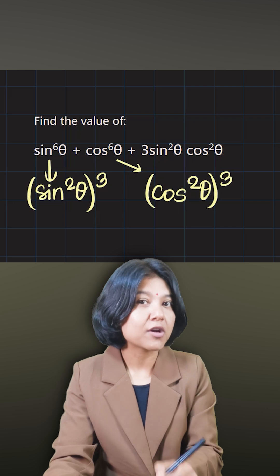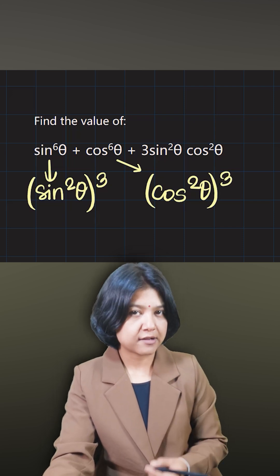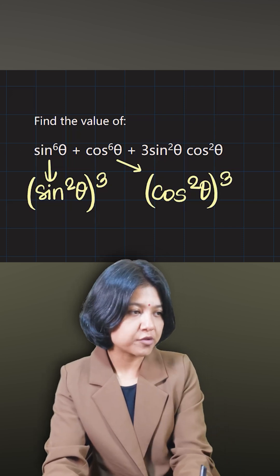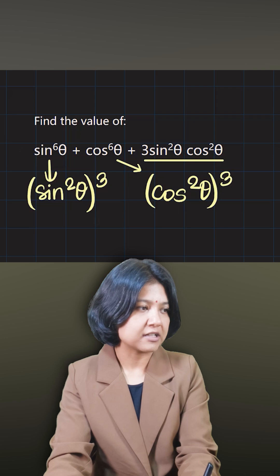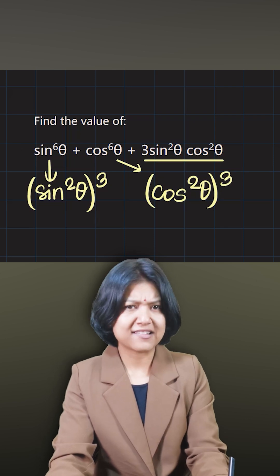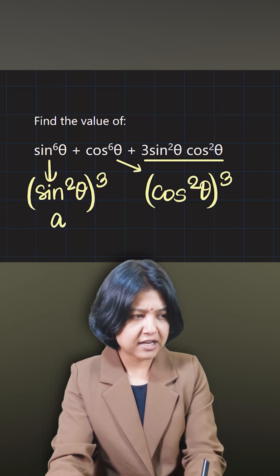I'm sure you know the formula or you have seen the cubed terms coming up somewhere. And if you look at the next term, 3 sine squared theta cos squared theta. So if my sine squared theta, if I say that is a and cos squared theta is b,